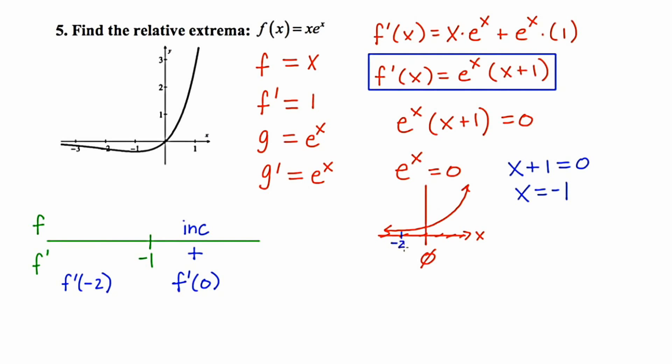Now if I put negative 2 in, e to the negative 2, I could actually look at the graph over here. If I plug in negative 2, the output is going to be some sort of positive number, so that's going to be positive. But negative 2 plus 1 is negative 1. And the product of a positive and a negative is a negative, which means that the original function is decreasing.